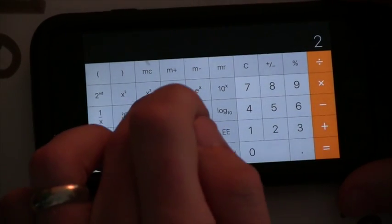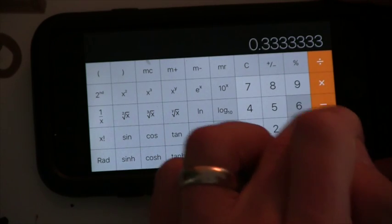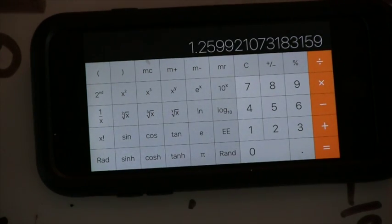2 to the 0.33333333. So, around 1.2599, a little bit bigger than 1.25, just kind of like we found, even though I think I had a wrong digit in that power.